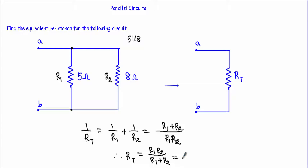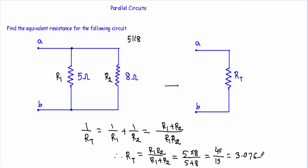Here R1 = 5 and R2 = 8, so RT = (5 × 8) / (5 + 8). 5 times 8 equals 40, and 5 plus 8 equals 13. Therefore our total resistance RT will be equal to 40/13, which is approximately 3.076 ohms. This means I can replace these two resistances with an equivalent resistance of 3.076 ohms.